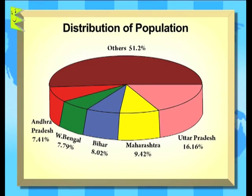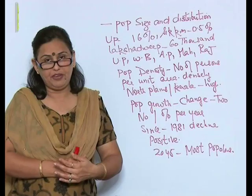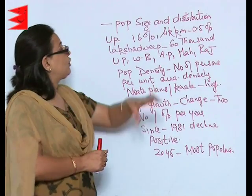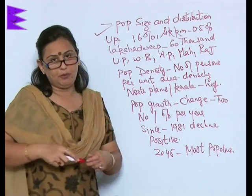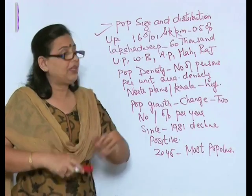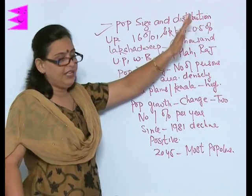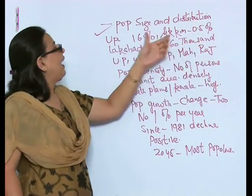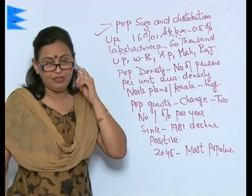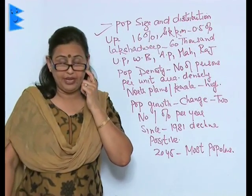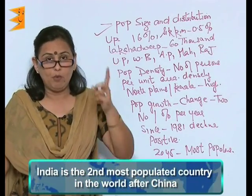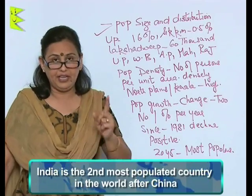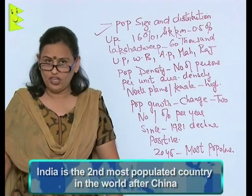Uttar Pradesh, West Bengal, Andhra Pradesh, Maharashtra, and Rajasthan are the five states where half of India's population lives. The population is very unevenly distributed. In terms of size, India is the second most populated country in the world, after China.